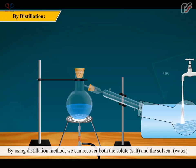By using distillation method, we can recover both the solute, salt, and the solvent, water. Take some impure water in a round bottom flask. Connect other end of the round bottom flask to a receiver flask through a condenser, which is continuously cooled down by running water.